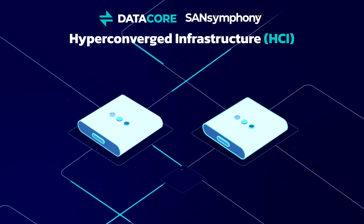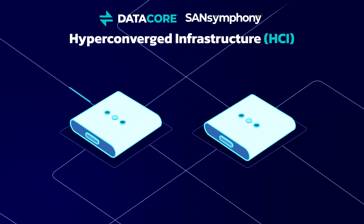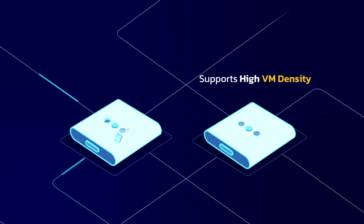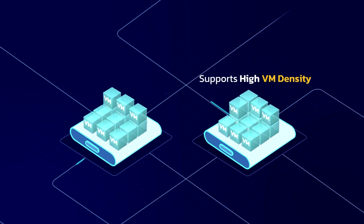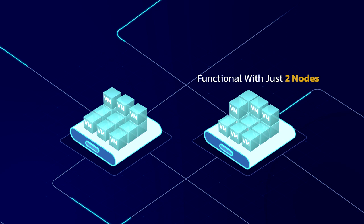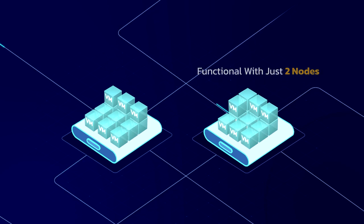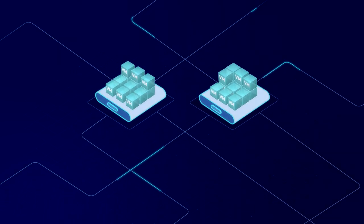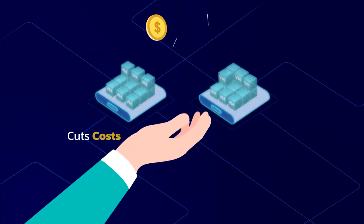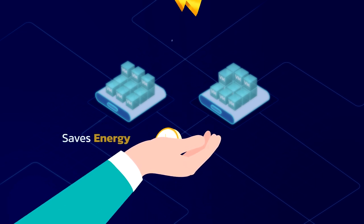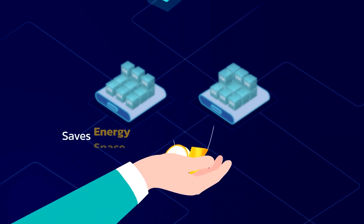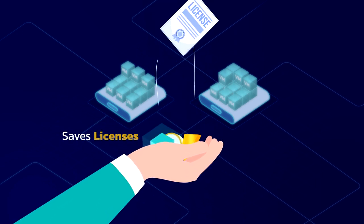Designed for efficiency, SanSymphony supports high virtual machine density and is fully functional with just two nodes — no third instance is needed. This not only cuts costs and management efforts, but also saves you energy, space, and licenses.